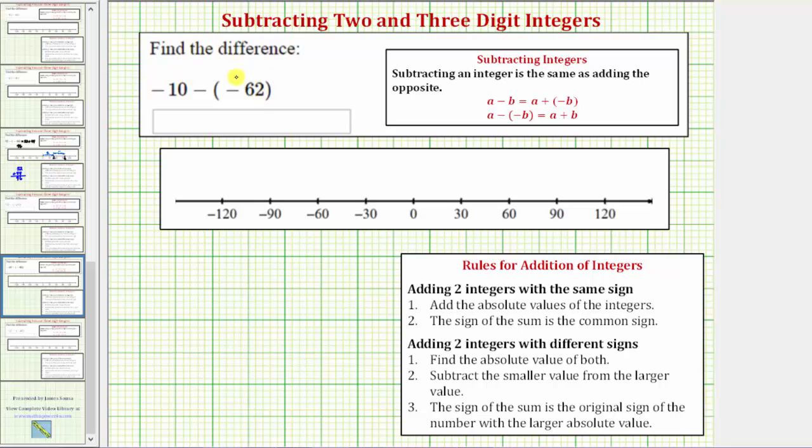So we can write -10 minus -62 as -10 plus +62. Looking at this sum, we should recognize that the positive 62 will outweigh the negative 10, so the sum will be positive. To find this sum, we'll use the formal rules for adding integers shown below and also show the sum on the number line. Because we have a negative plus a positive, we'll use the rules for adding two integers with different signs.